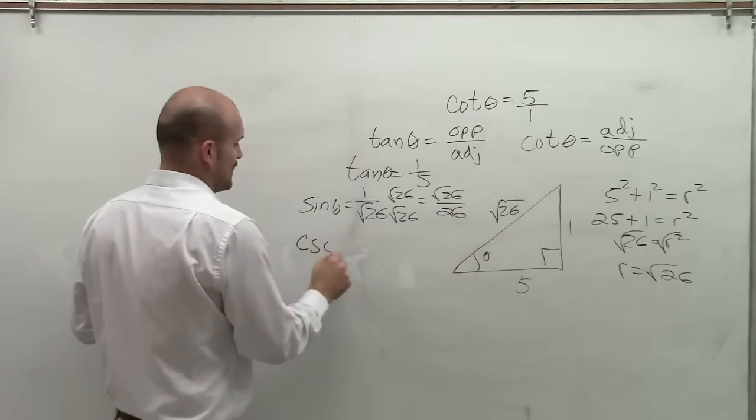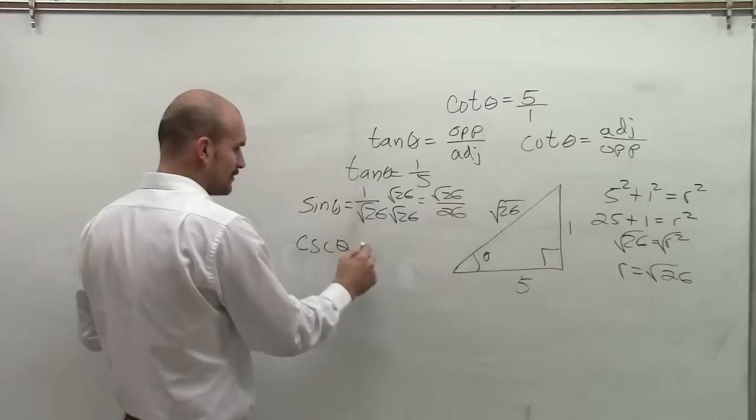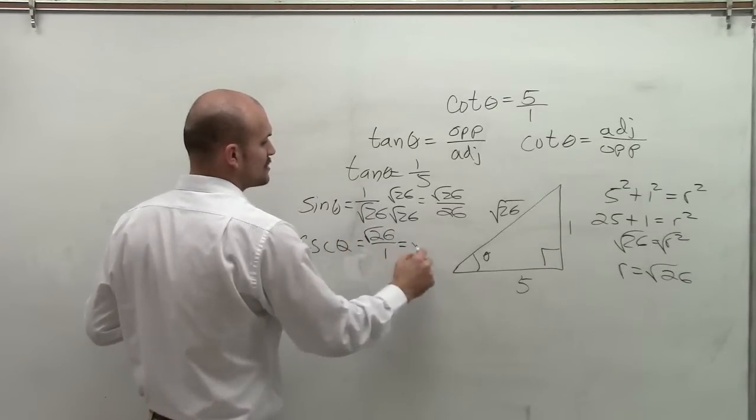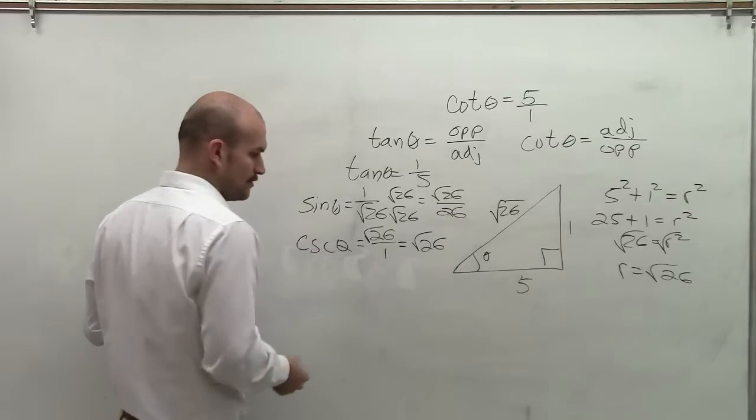So the cosecant, the reciprocal of that, is going to be square root of 26 over 1, which is just equal to square root of 26.